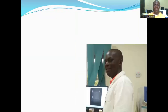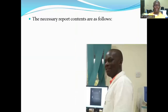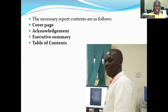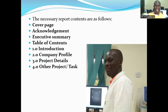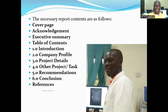The industrial training report should contain: a cover page, the acknowledgement, the executive summary, table of contents, introduction, company profile, project details reports, other project tasks, recommendations, conclusions, as well as references, daily task reports, and appendices.